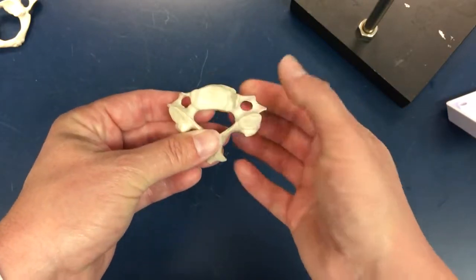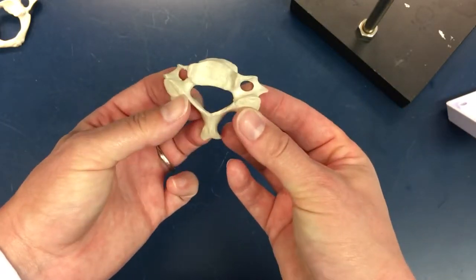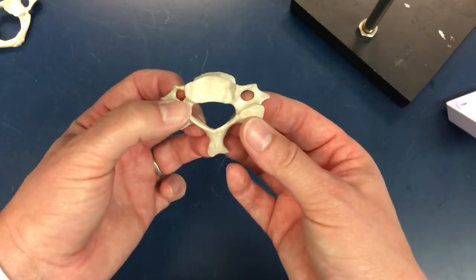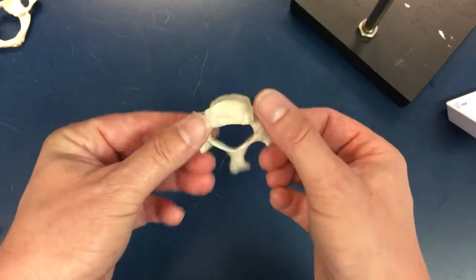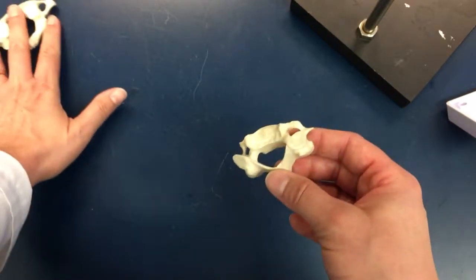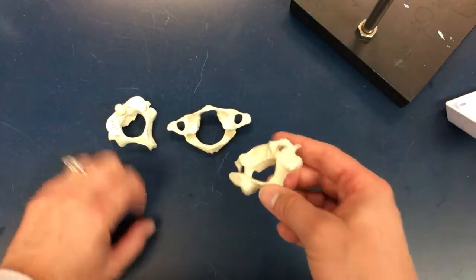You can see it does have a small body to it, but it also has those transverse foramen. This is just a cervical vertebrae—you don't have to be specific on this one. You will have to be specific on these two on the test.